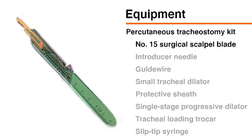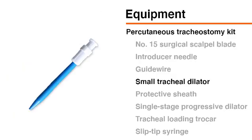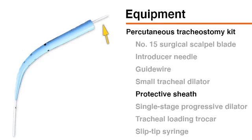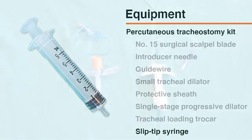A percutaneous tracheostomy kit generally includes a number 15 surgical scalpel blade, an introducer needle, a guide wire, a small tracheal dilator, a protective sheath, a single-stage progressive tracheal dilator, a tracheal loading trocar, and a small slip-tip syringe.